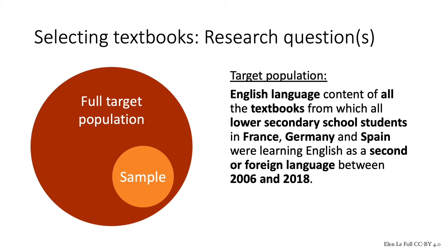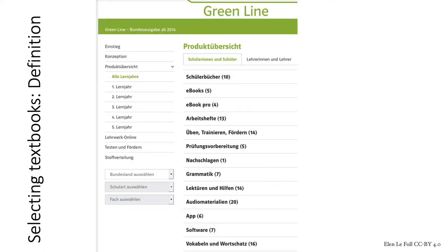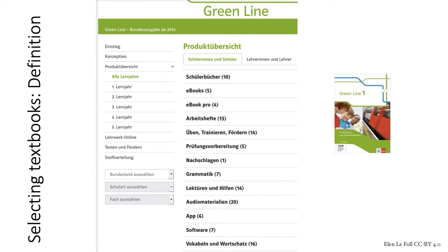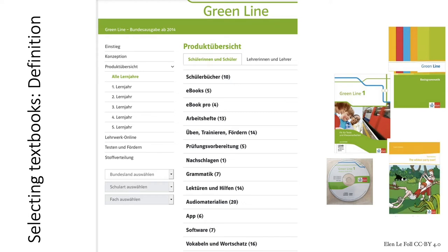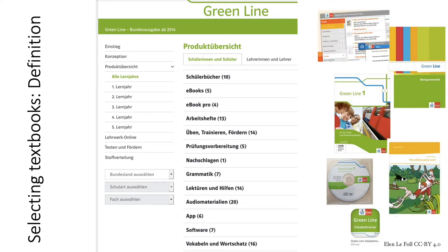Before we look at ways to select which textbooks ought to be included in the sample, we need to first define 'textbook', and that's no mean task. Nowadays, modern publishers publish textbook packages, and these will include the students' books, the course books, but also maybe grammars, audio, video material, additional readings, websites and vocabulary apps, for instance. And there's a whole range of products that's targeted at teachers too.